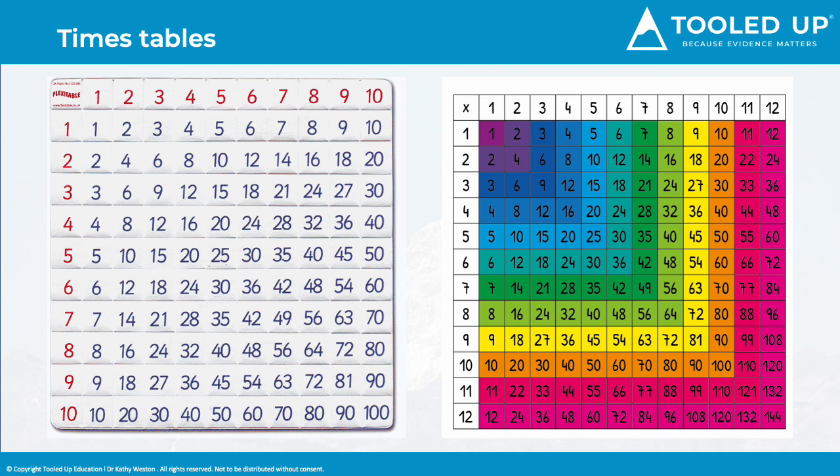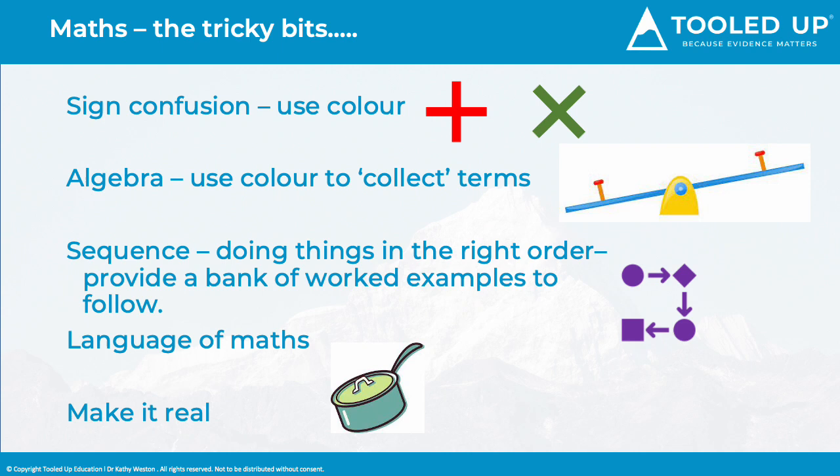Providing times table grids is a reasonable adjustment if that's not the thing that's being tested but of course the student needs to know how to use it. Color can help a student to see reversible patterns and in my opinion we don't need to learn to 12, we only need to go to 10 because after all 11 is our 10s plus our 1s and 12s is our 10s plus our 2s.